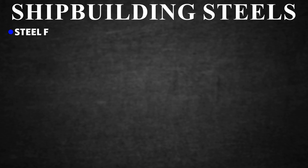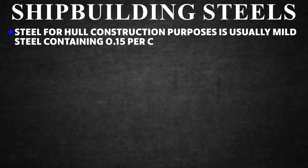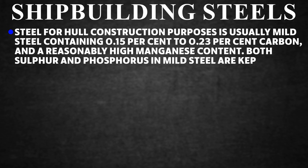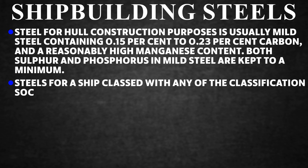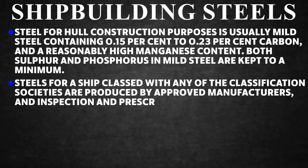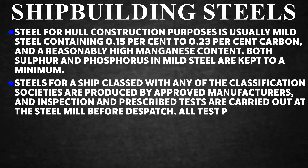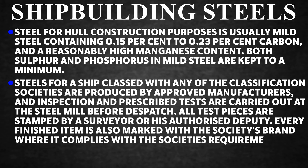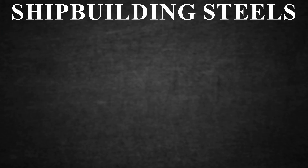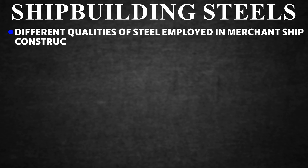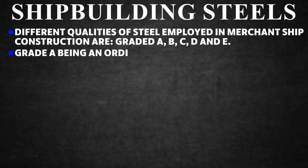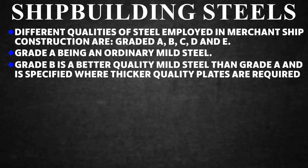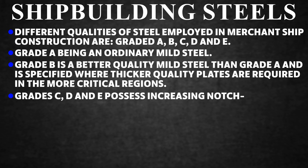Shipbuilding Steels. Steel for hull construction is usually mild steel containing 0.15% to 0.23% carbon and a reasonably high manganese content. Both sulfur and phosphorus in mild steel are kept to a minimum. Steels for ships classed with any classification society are produced by approved manufacturers, and inspection and prescribed tests are carried out at the steel mill before dispatch. All test pieces are stamped by a surveyor, and every finished item is marked with the society's brand. Different qualities of steel in merchant ship construction are graded A, B, C, D, and E. Grade A is ordinary mild steel; Grade B is better quality than A and is specified where thicker plates are required. Grades C, D, and E possess increasing notch-toughness characteristics.